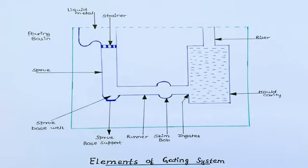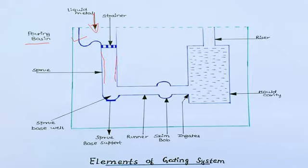These are the elements of the gating system, as shown in the diagram. The first element is the pouring basin. Here we can see we pour the molten metal through the pouring basin, and the molten metal passes through the sprue and further into the mold cavity. The pouring basin is provided to minimize the velocity of liquid metal.